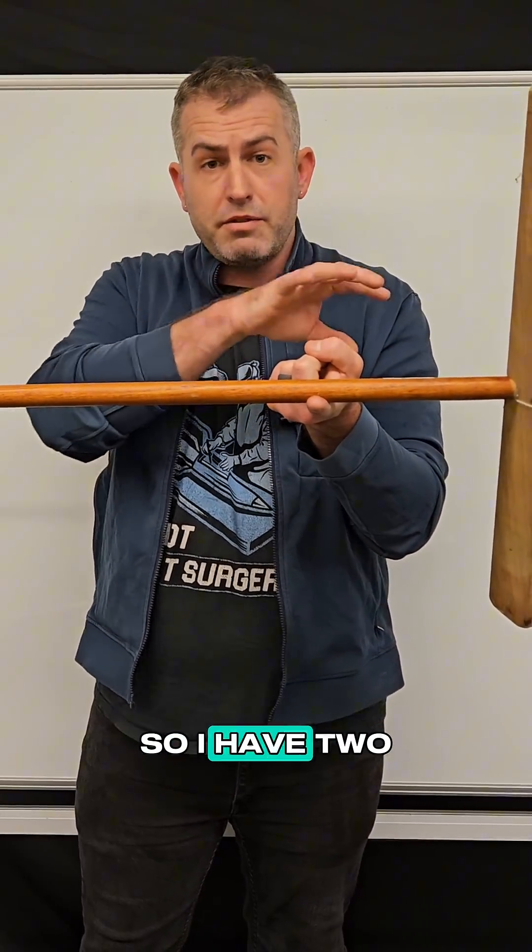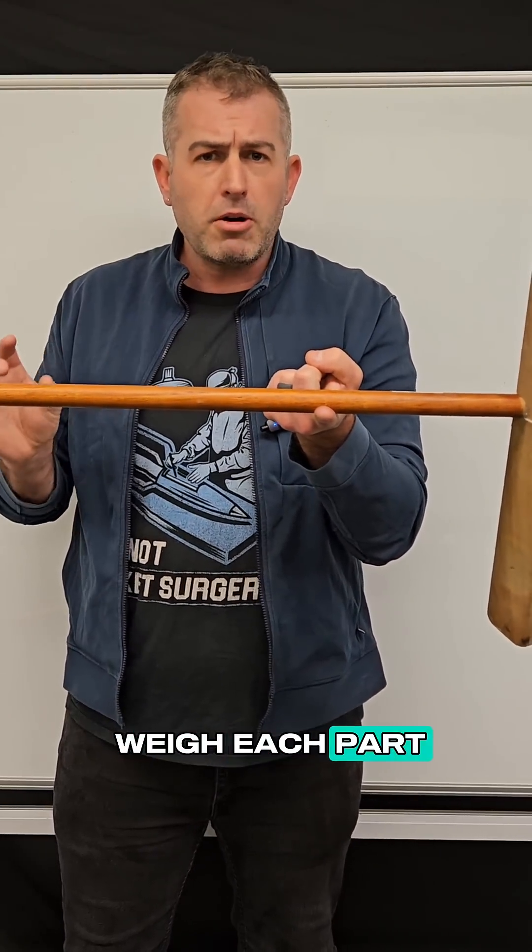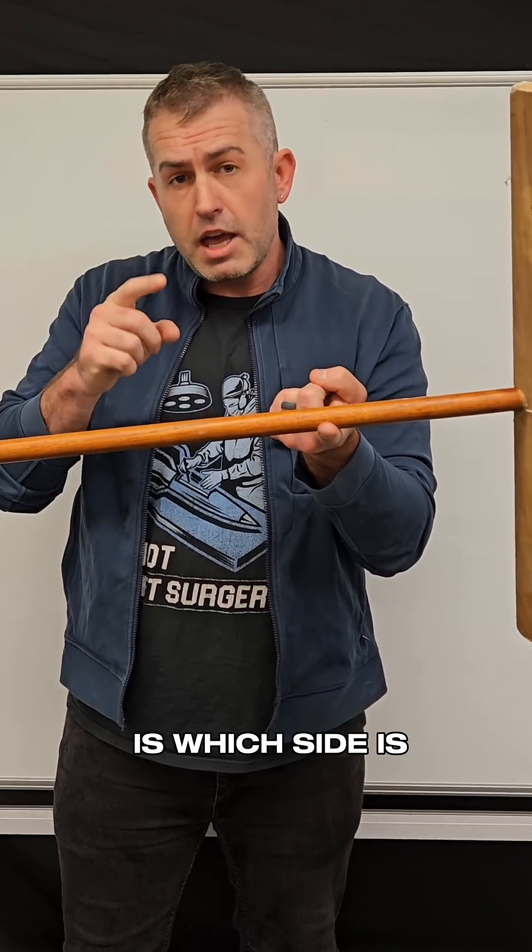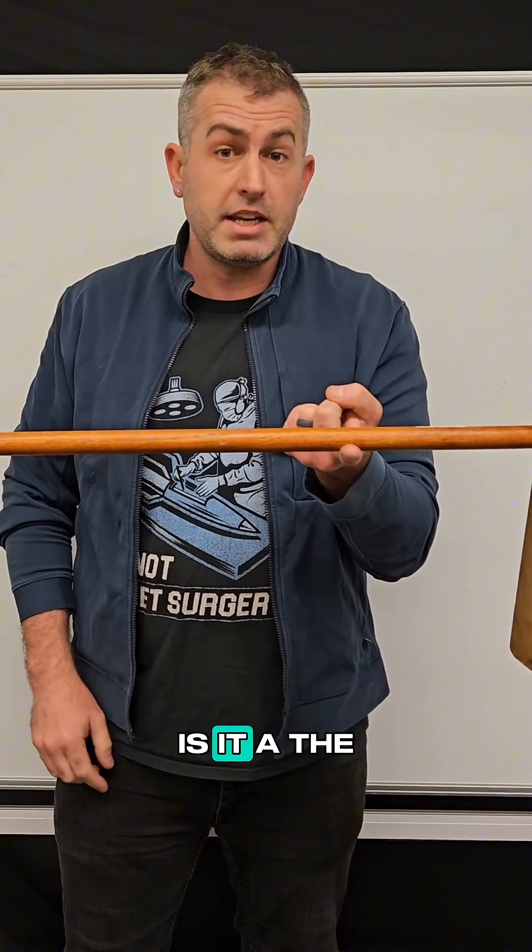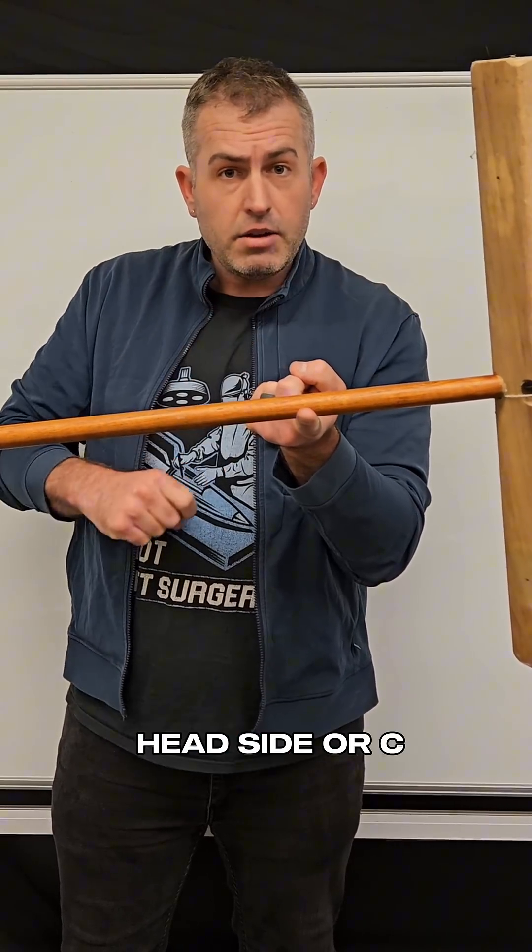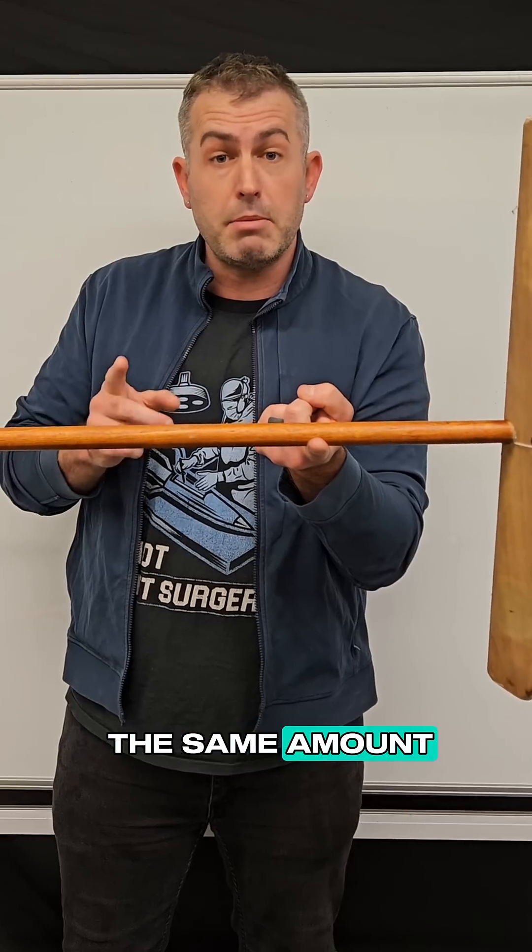I'm going to saw it in half so I have two parts, and I'm going to weigh each part, the broom head and the broomstick on this side. My question to you is which side is going to weigh more? Is it A, the stick side, B, the head side, or C, are they going to weigh the same amount?